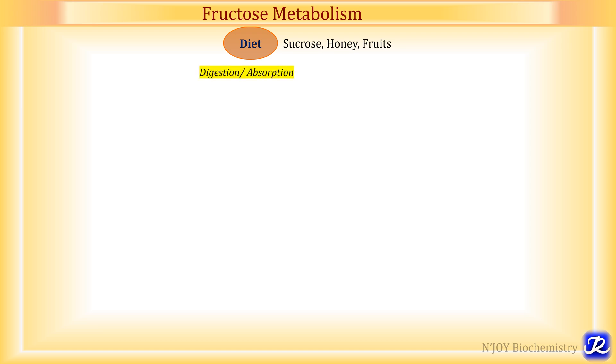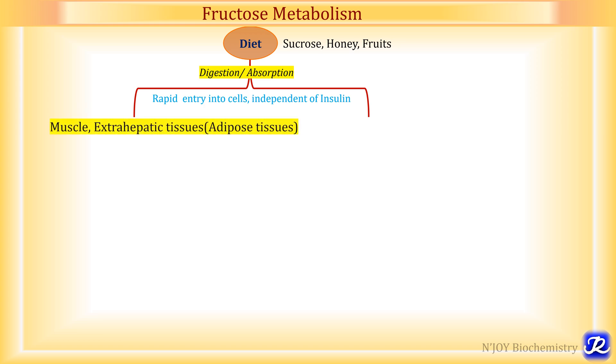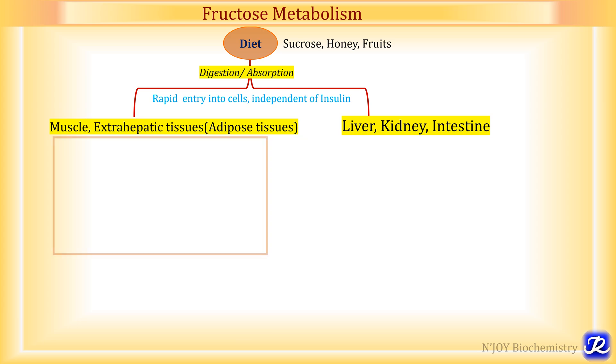Once it is digested and absorbed, the entry of fructose in cells is rapid and it is independent of insulin. Further metabolism of fructose is different in muscle and extrahepatic tissues — for example, adipose tissue — from the metabolism of fructose in liver, kidney and intestine. Let us first see how fructose is metabolized in muscle and extrahepatic tissues like adipose tissue.